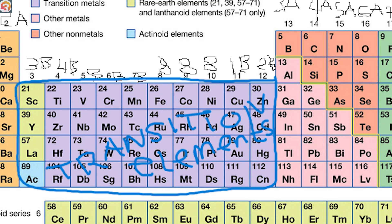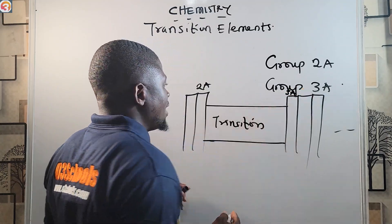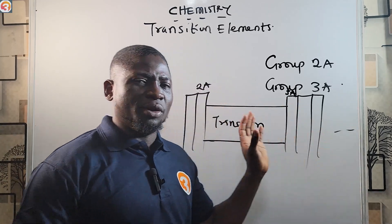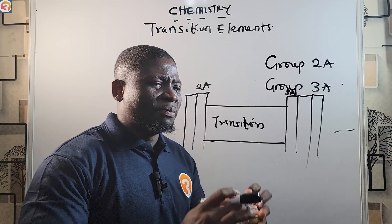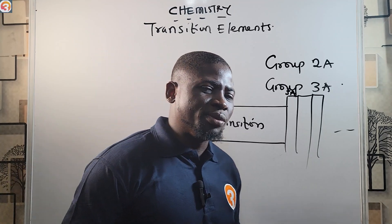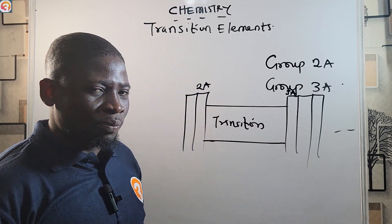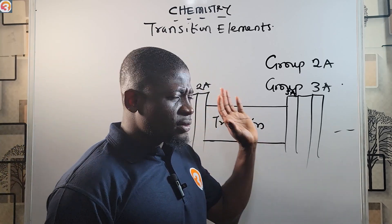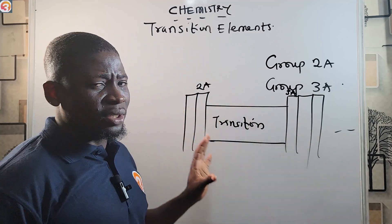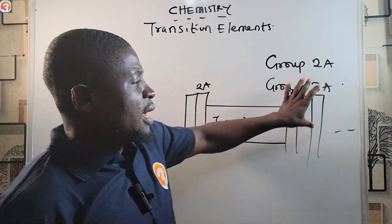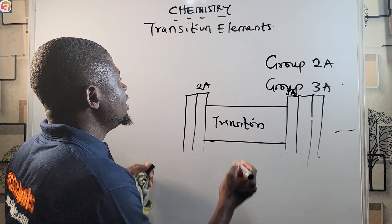So the transition elements are in between group 2A and group 3A. In previous videos I've already talked about numbering of groups in the periodic table and cleared up the erroneous view that there are eight groups — there are 18 groups according to the International Union of Pure and Applied Chemistry, IUPAC. These transition elements are also called the d block elements.